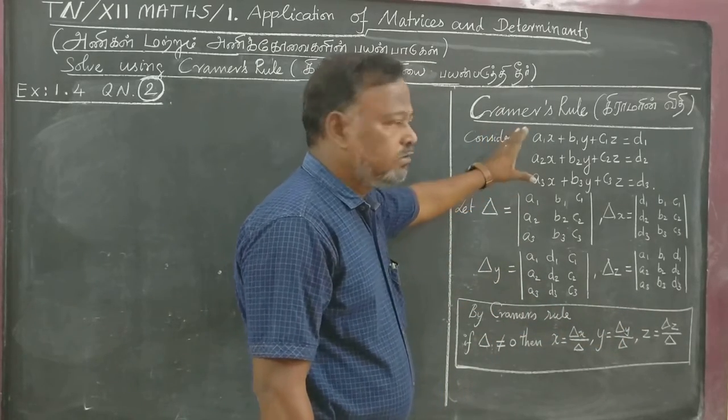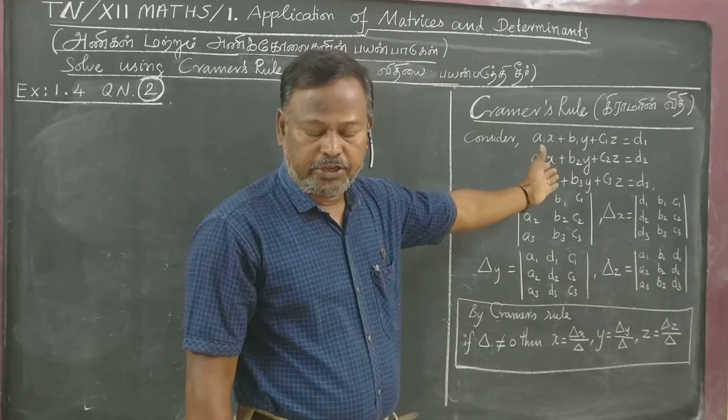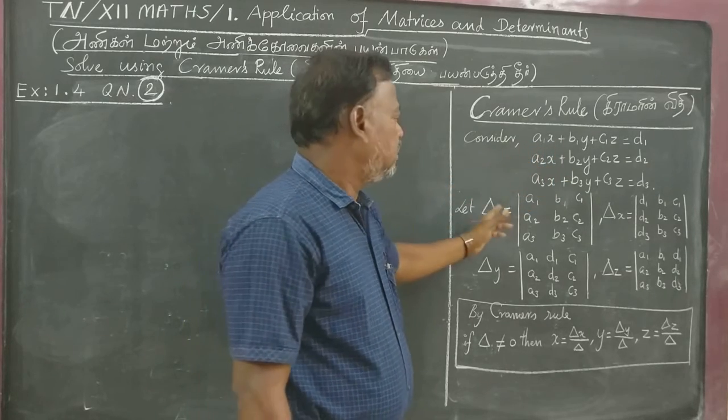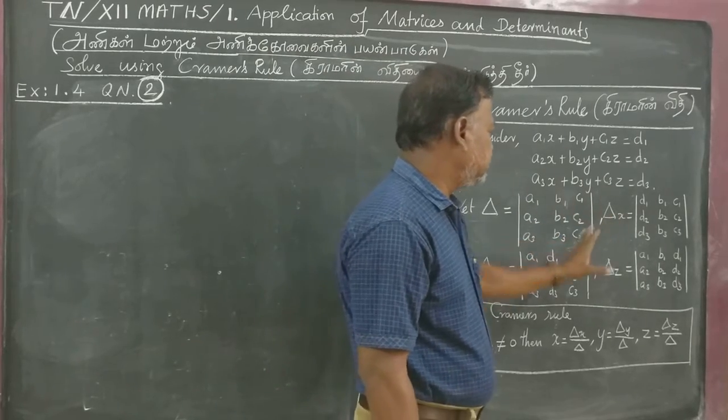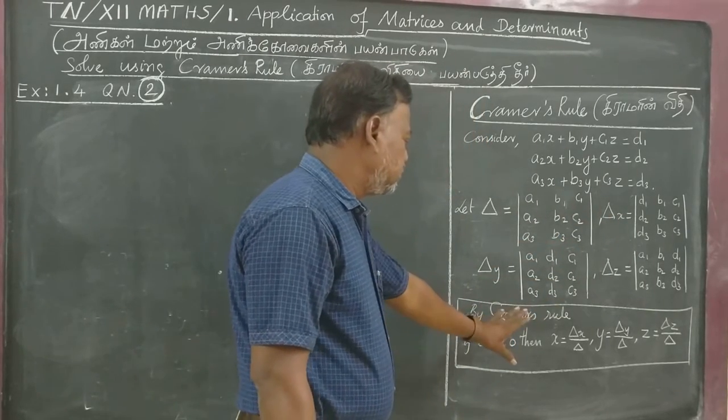Here I am taking three variable equations. Delta x, delta y, delta z. This is Cramer's Rule.